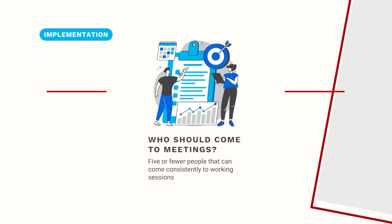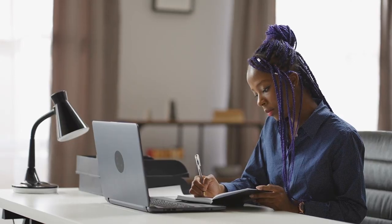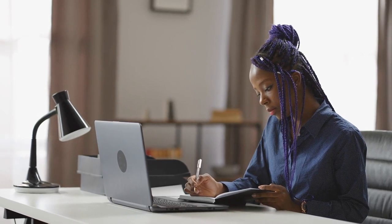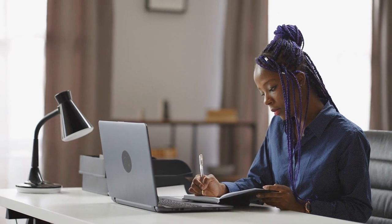We recommend that you bring the same team members to each working session for consistency, and we also recommend bringing five team members or fewer. With too many people all learning at different speeds, divergent questions may slow down the flow and limit the effectiveness of the calls. At the end of each working session, you will have a to-do list and your implementer will also have a to-do list.